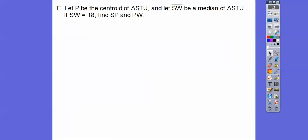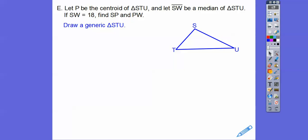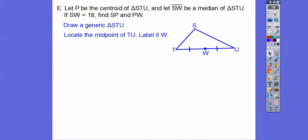So let P be the centroid of triangle STU, and let segment SW be a median of triangle STU. It says SW equals 18; find SP and PW. Draw a generic triangle, construct a midpoint on the opposite side, and draw the median. P is the centroid floating on the median — about one-third of the whole length from the midpoint end, two-thirds from the vertex. SW equals 18, so PW is one-third of 18, which is 6.